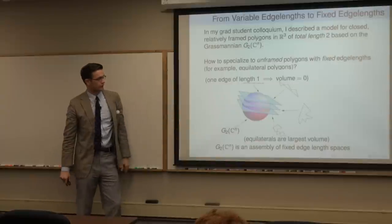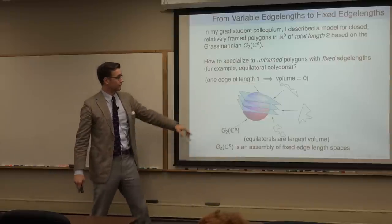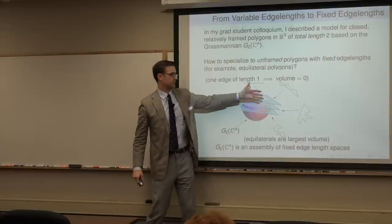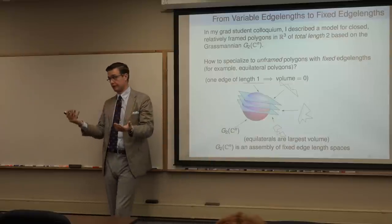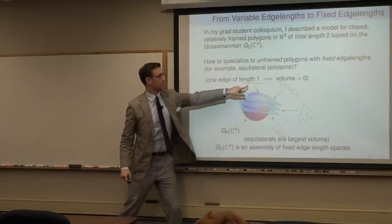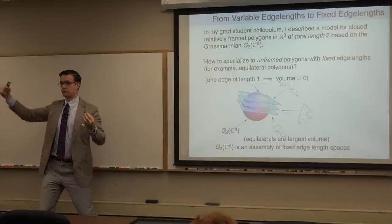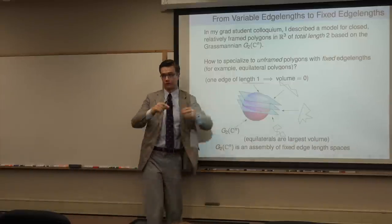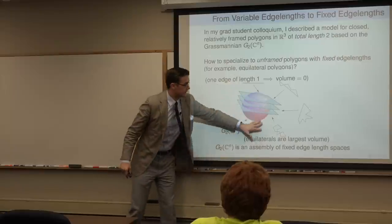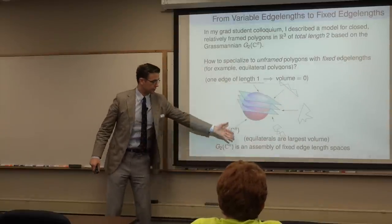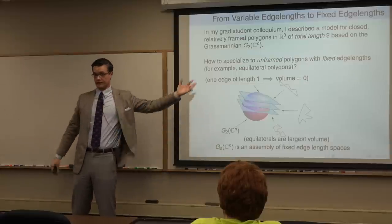This is a heuristic picture of the Grassmannian. You have different submanifolds determined by different choices of edge lengths. Up here, you can have one edge of length one — but since total length is two, that means the polygon lies on a line. As you'd expect, the volume of that space is zero. It turns out to be a theorem that equilateral polygons give the biggest-volume space among these different spaces of prescribed edge lengths.